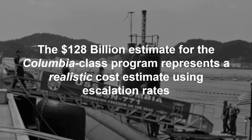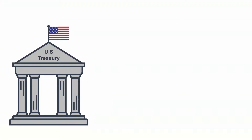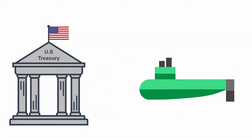For the Columbia class program, the $128 billion figure reflects a realistic cost estimate using the escalation rates of the various types of material, tooling, labor, and other cost components included in the program. The $128 billion figure represents the actual amount of dollars the government expects to spend on the Columbia class program over 35 years.